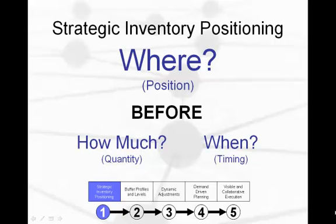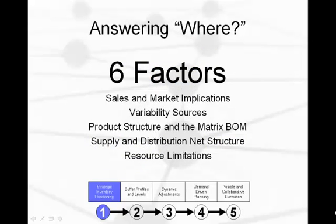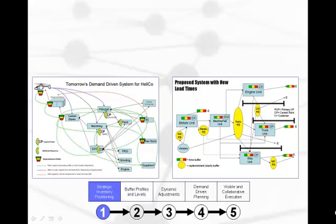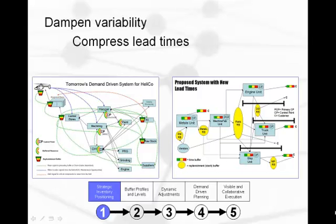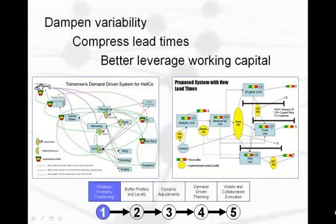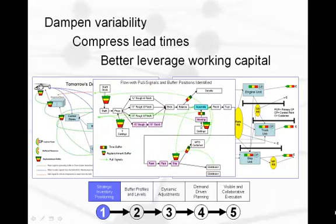So how do we effectively answer the question, where? There are six factors that must be considered in combination, and these factors touch on a variety of cross-functional concerns. Thus, answering the question of where is not something that any one person or function should do. The answer is strategic in nature, and a design must be carefully crafted in order to dampen variability, compress lead times, and better leverage working capital. While it starts out at a strategic level, it must be carried all the way down to the operational level.